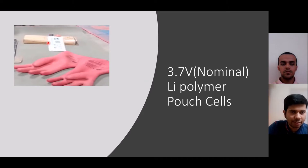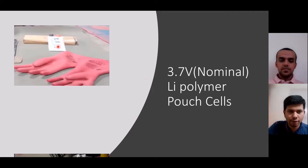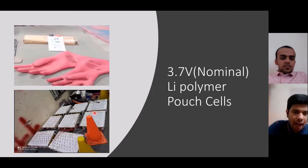This is an illustration of a lithium polymer pouch cell which has a nominal voltage of 3.75 volts and a battery pack that can work up to a voltage of around 4.15 volts.